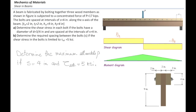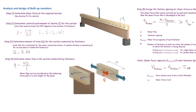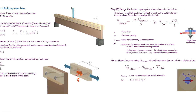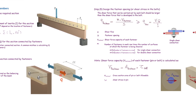Now I want you to solve a variation of this problem. Set the spacing equal to 4 inches and the allowable shear stress equal to 5 ksi, and determine the maximum allowable force P that this beam can carry. Use the same design equation, but now solve for P.